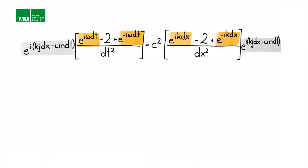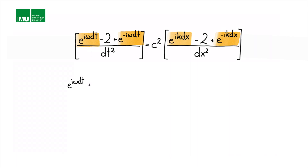We divide both sides by the discrete plane wave. On the left-hand side we're left with (e to the i·omega·dt plus e to the minus i·omega·dt minus 2). This equals c squared times dt squared over dx squared, multiplied by (e to the i·k·dx plus e to the minus i·k·dx minus 2).